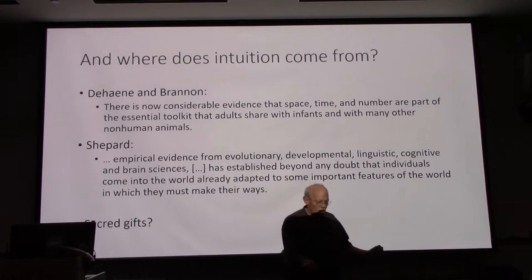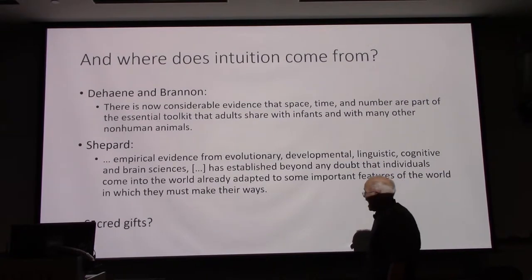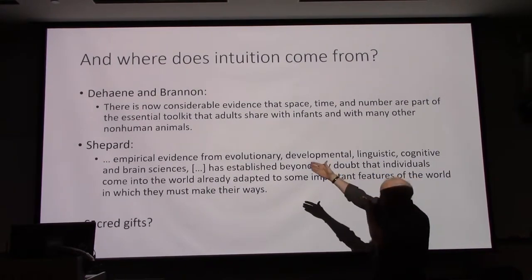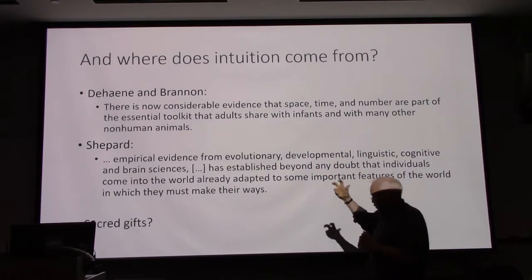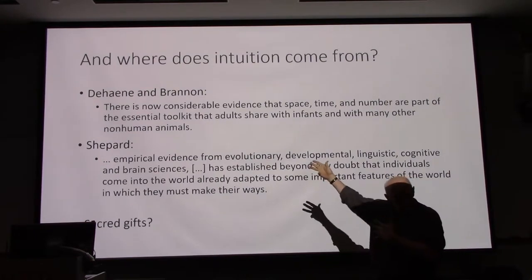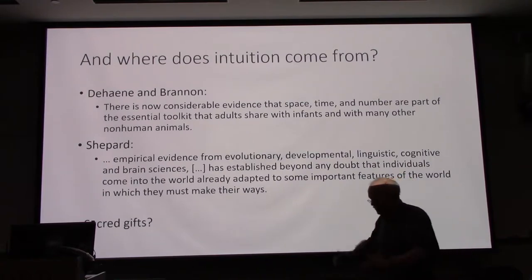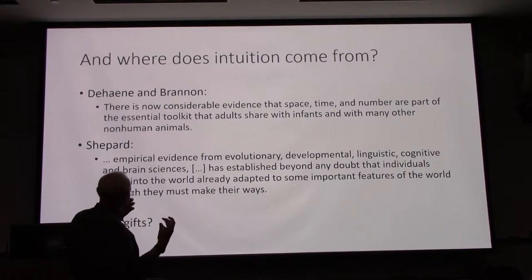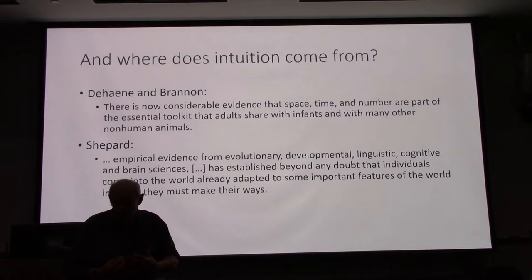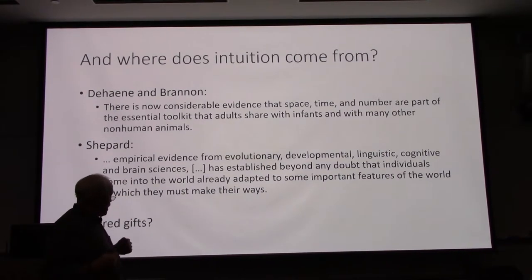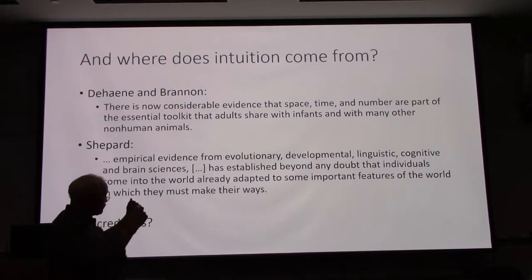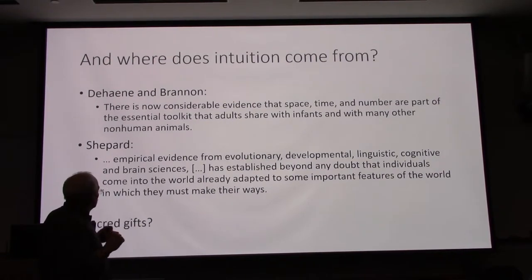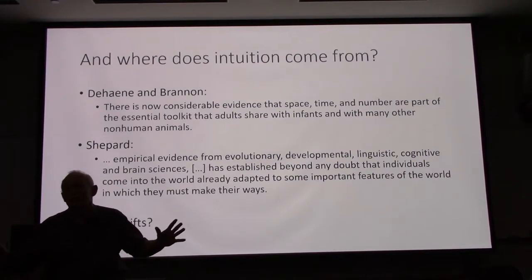So now, we have the next question, which is where do these intuitions come from? And Roger Shepard himself and his disciple, Stanislas Dehaene, who is a very strong protagonist of Shepard's work, and is currently still very active in the field as a leader in cognitive science in Europe, had a colleague where there's now considerable evidence that space, time, and number are part of the core knowledge that adults share with infants, and with many other non-human animals. We're born with these intuitions, and that's what Shepard thought as well. Empirical evidence from evolutionary development, linguistic, cognitive, and brain sciences is established beyond any doubt that individuals come into the world already adapted to some important features of the world in which they must make their ways.